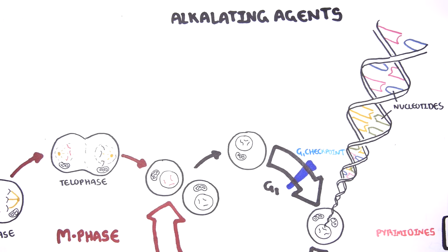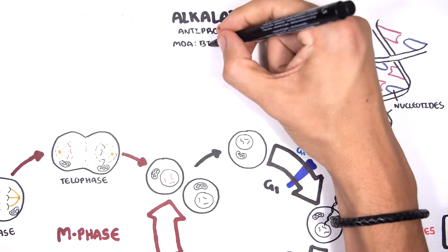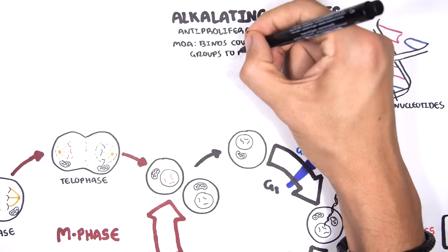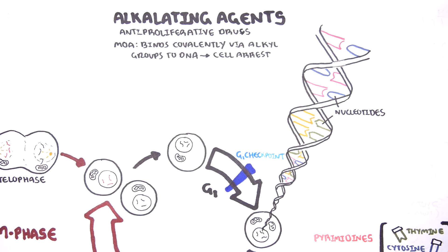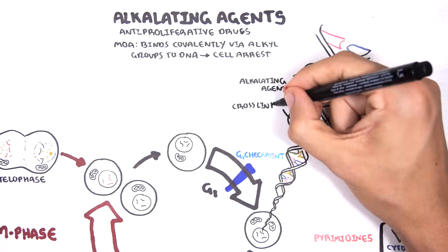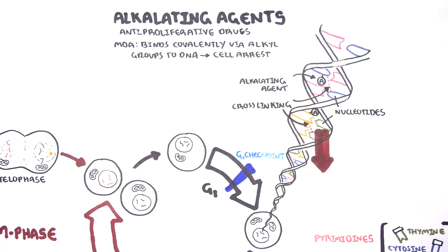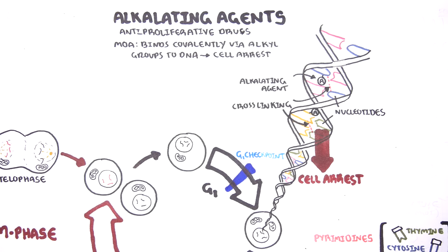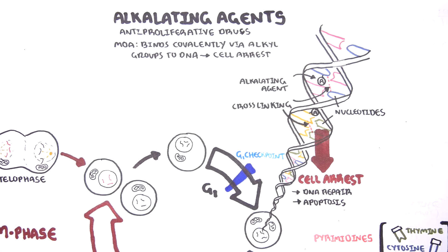Alkylating agents are anti-proliferative drugs. They work by binding covalently via alkyl groups to DNA, forming crosslinks, and are thought to arrest the cell cycle in the G1 or S phase. They bind specifically to the nucleotide guanine and once bound, form crosslinkage of DNA strands. Broken or crosslinked DNA is intrinsically unable to complete normal replication or cell division, so the cell undergoes arrest. The cell will then either be repaired and proceed through the cell cycle, or it will undergo apoptosis.